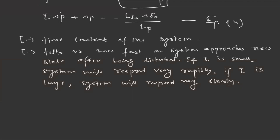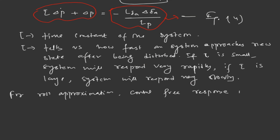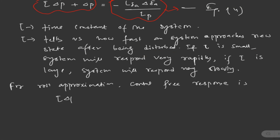Since we are studying the natural dynamics, we are not taking control into the picture. So in equation number 4, we have to neglect the control input part, because that part talks about the forced motion. The right-hand side of the equation talks about the control part. To study the natural behavior of the system, we consider the control-free response: tau · ΔP_dot + ΔP = 0.